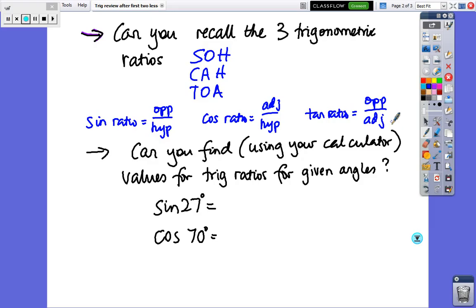Ok, so next thing, can you find, using your calculator, values for trig ratios for given angles? So using your calculator, let's just go to two decimal places, can you get those two values? So make sure your calculator is in degree mode. Have a go, pause the tape, and when you're ready, come back live.